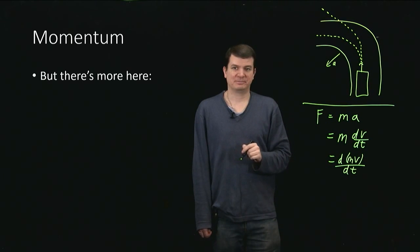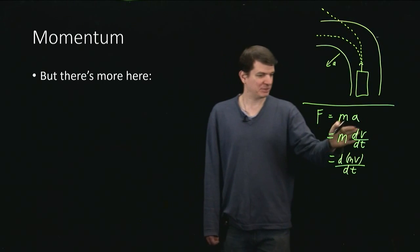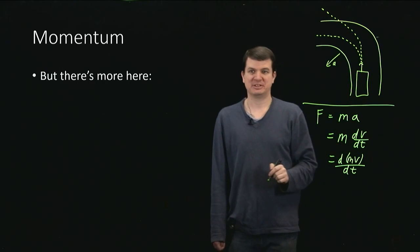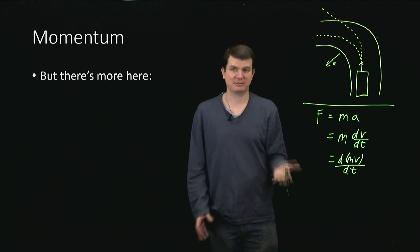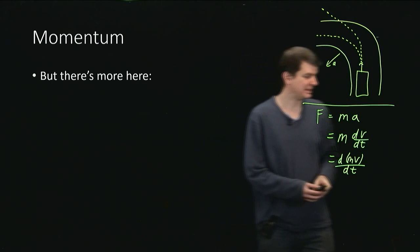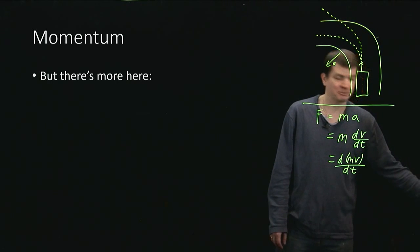Now, doing that has given me this nice quantity, or this nice product, m times v, that seems to describe actually the motion much better, because now it's got the mass as well as the actual velocity with which I'm moving.